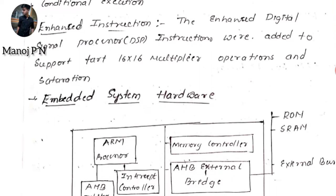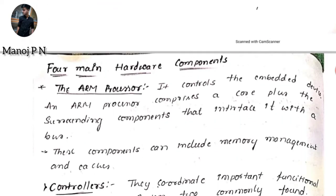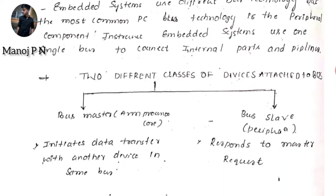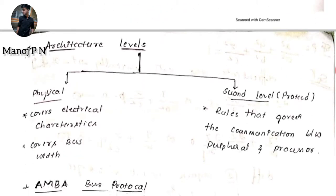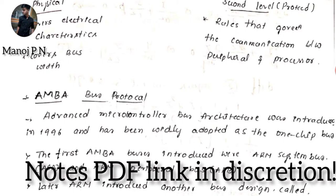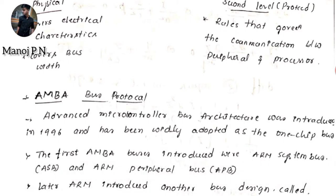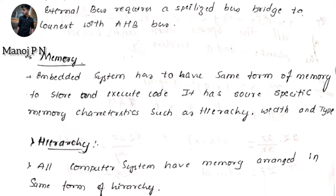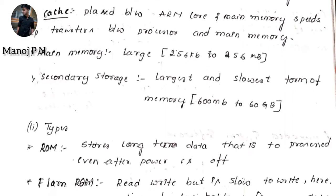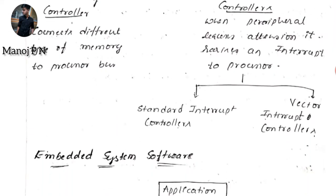We also have embedded system hardware with four main hardware components, ARM bus technology, architecture levels, and the very important AMBA — Advanced Microcontroller Bus Architecture — as well as memory hierarchy, all covered under those topics.